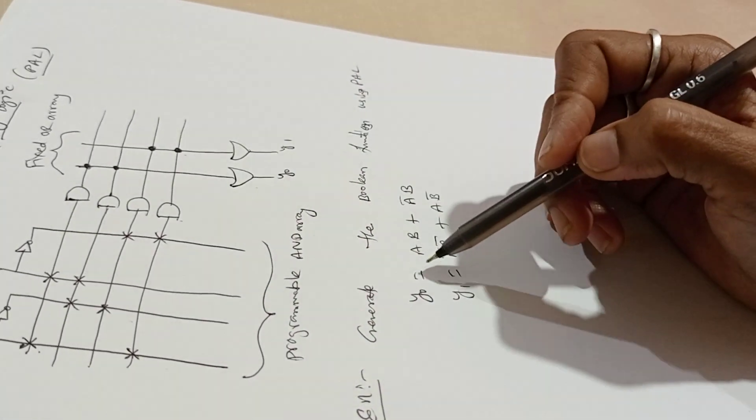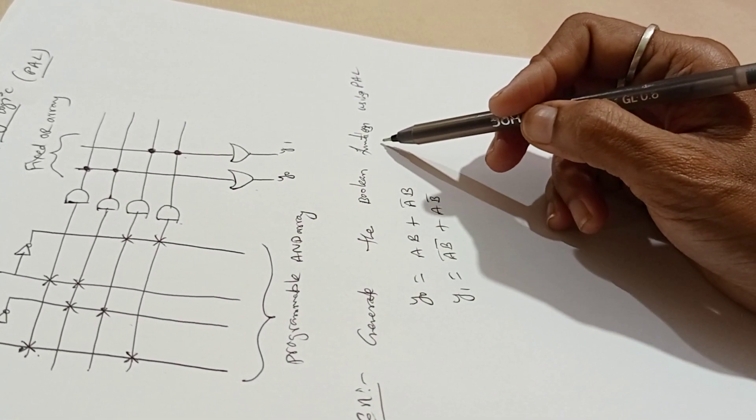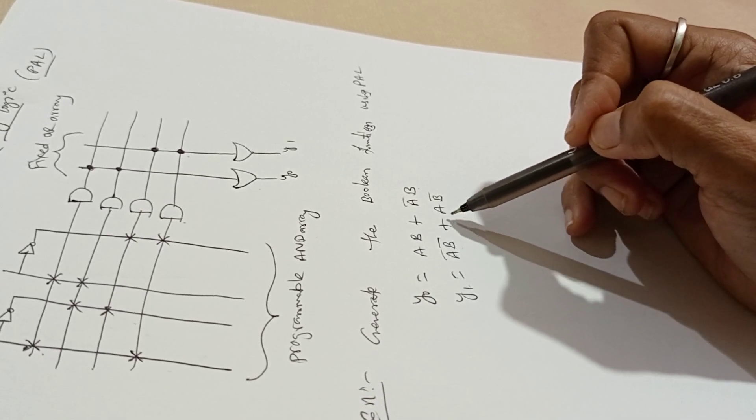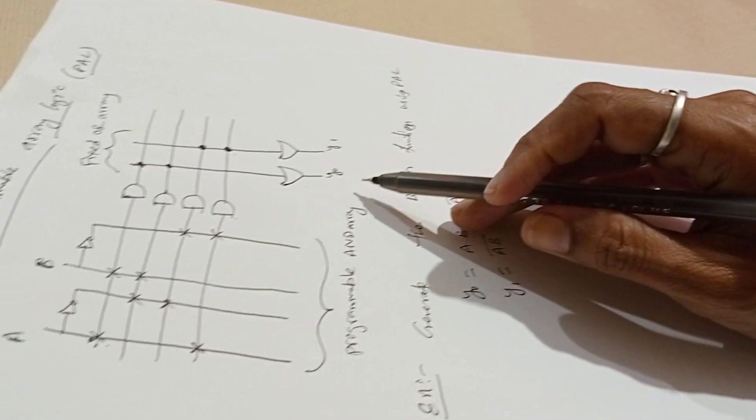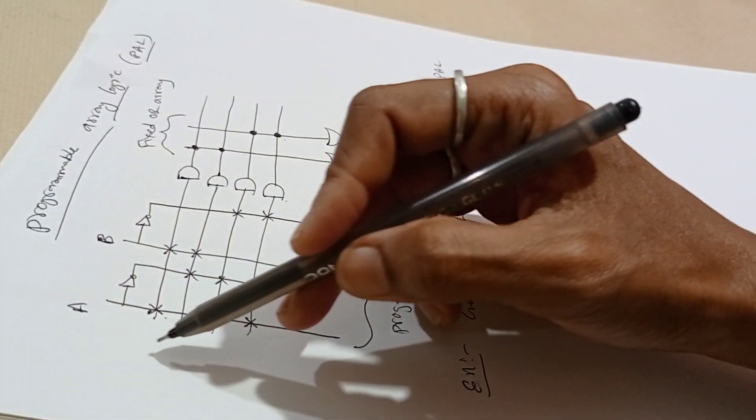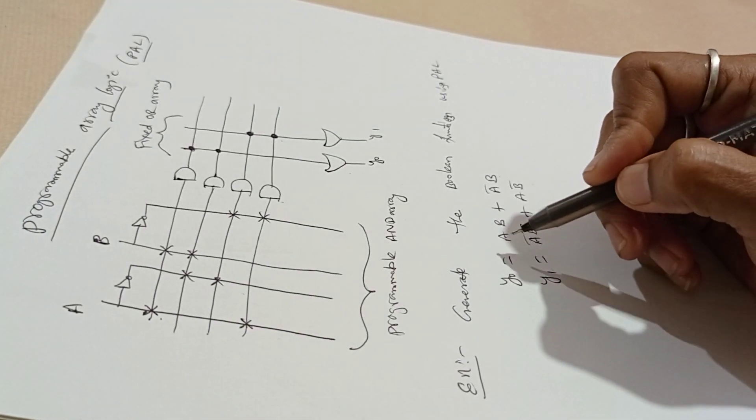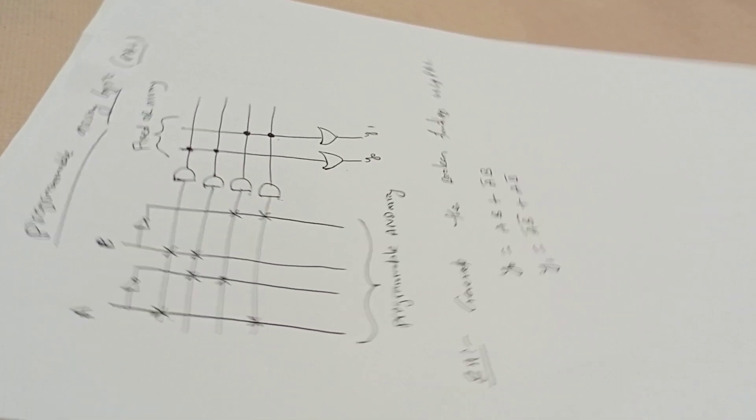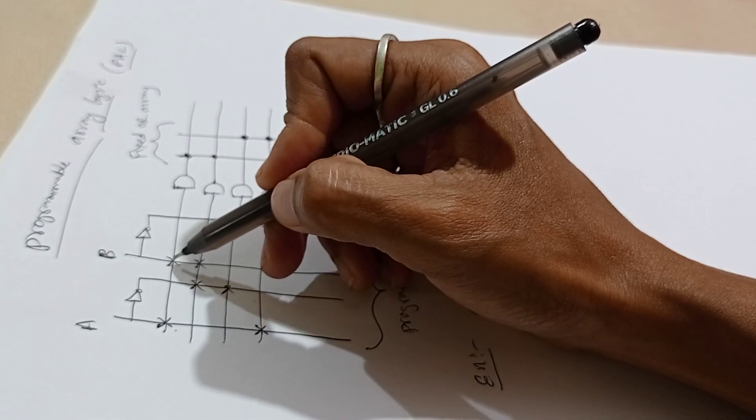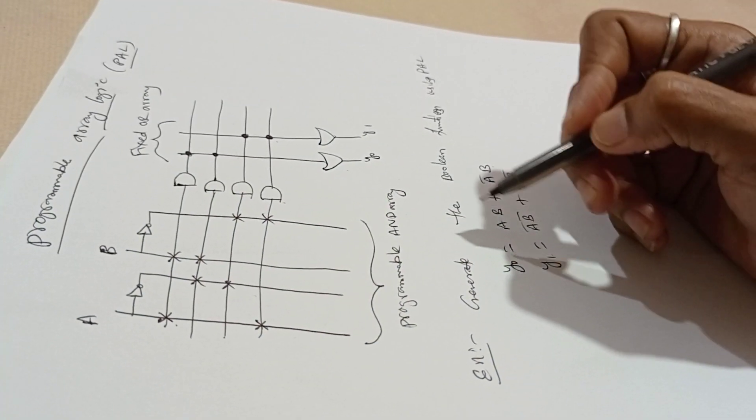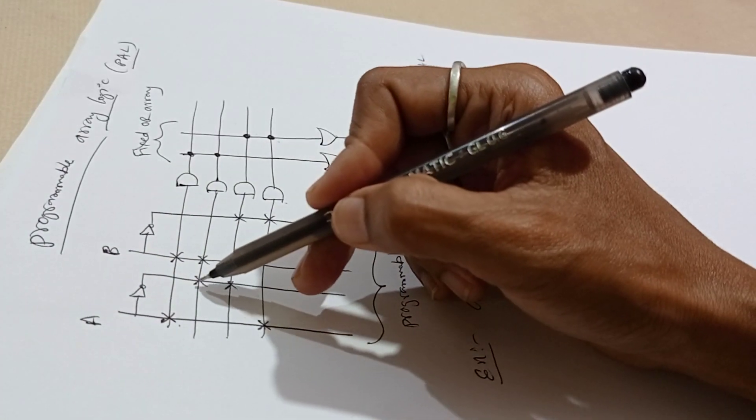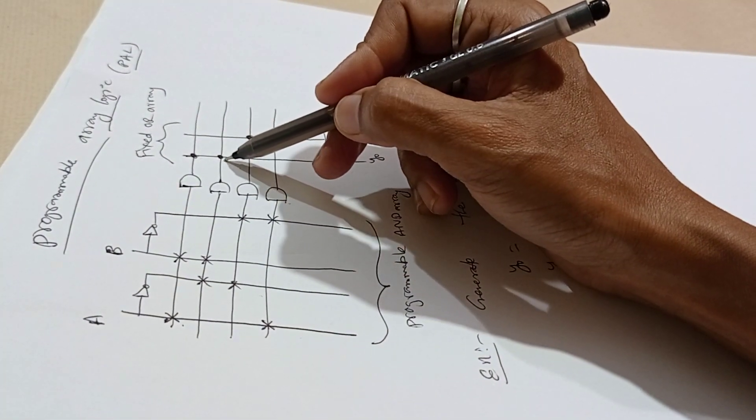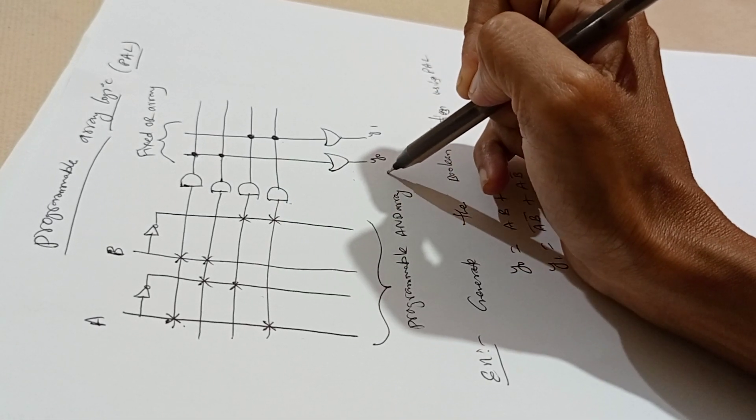For example, if the given Boolean function is Y0 equals AB plus A bar B, and Y1 equals A bar B bar plus AB bar, using PAL we design as follows. For the term AB, connect using cross because these are programmable according to our requirement. Cross A and B for one AND gate. Next, A bar B, take another connection from A bar and B, connect to AND gate. These two connections are fixed, so use dots and connect to OR gate. This becomes Y0.